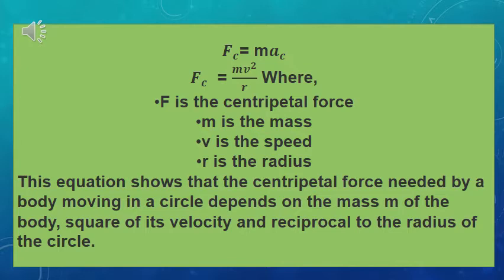Where FC is the centripetal force, M is the mass, V is the speed, and R is the radius of the circle. This equation shows that the centripetal force needed by a body moving in a circle depends on the mass M of the body, the square of its velocity, and is inversely proportional to the radius of the circle.